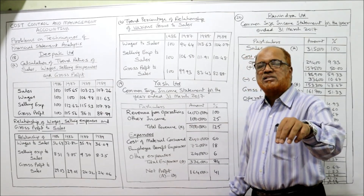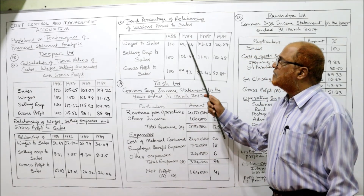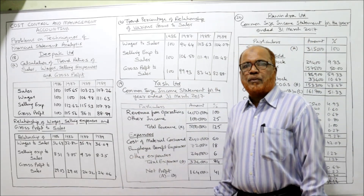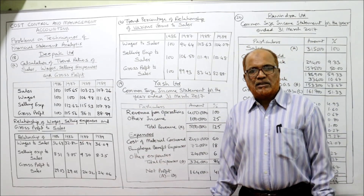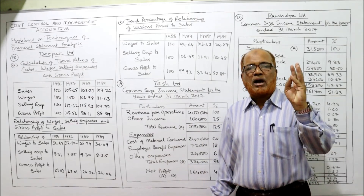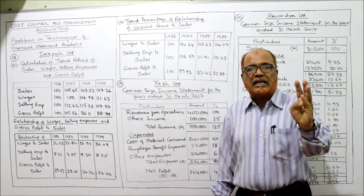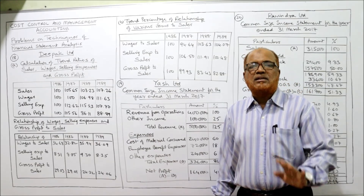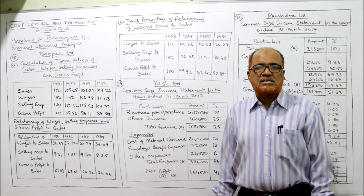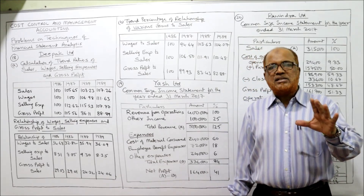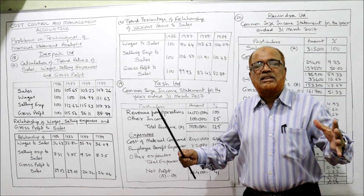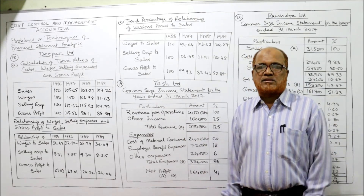That's it — this is the trend percentage of relationship of various variables to sales. This is the end of problem number 18. We have now completed the problems on comparative statement and trend analysis. The last technique is common size statement, which is also one of the techniques of analyzing financial statements.